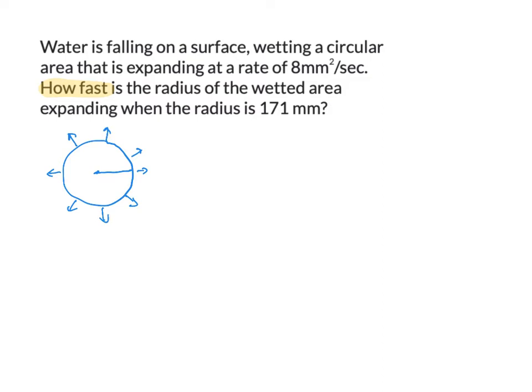The radius is getting bigger, so I put variable r on it. The entire shaded area is getting bigger, and I'll call that A. Numbers from the problem don't go in the picture unless they are constants, and we certainly don't place rates in the picture. After labeling the picture, I list the information from the problem separately. At the moment we're interested in, the radius r is 171 millimeters.